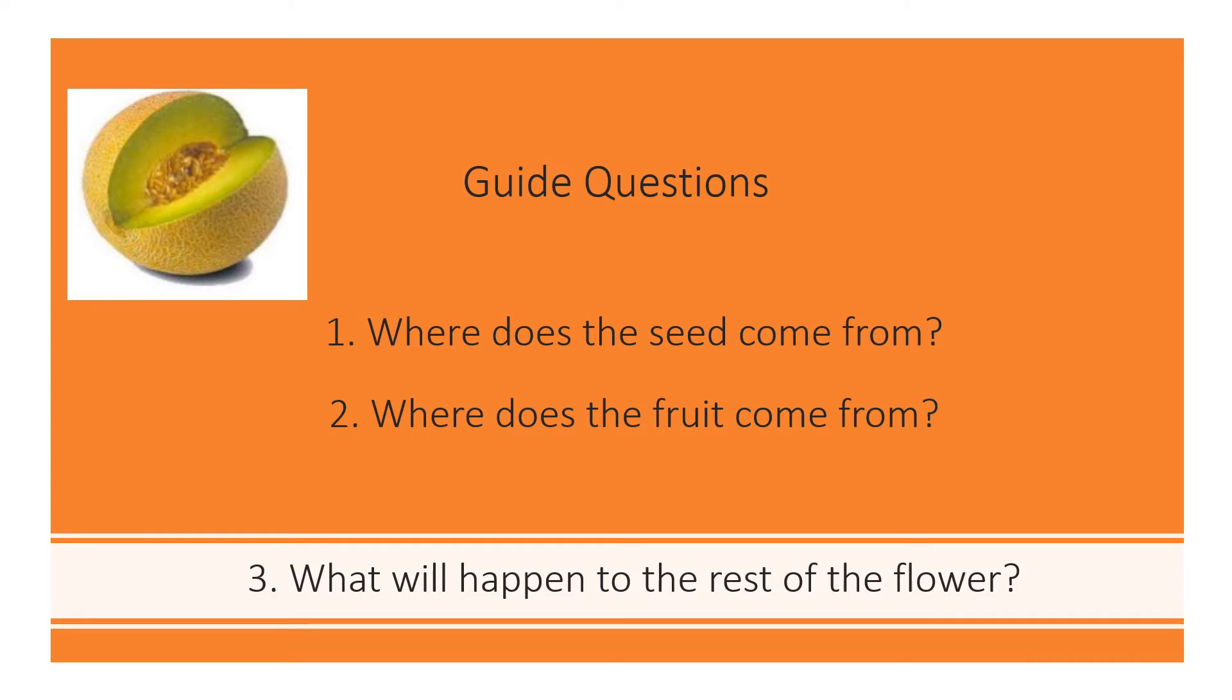Number two, where does the fruit come from? So the ovary as the outer part of the ovium will become the fruit. So it is the ovary that becomes the fruit.